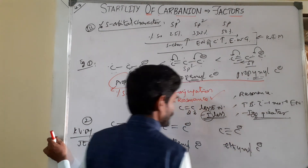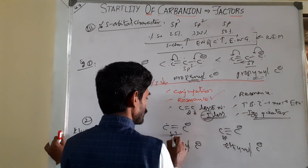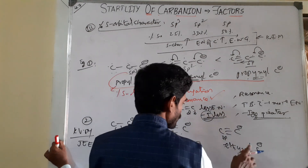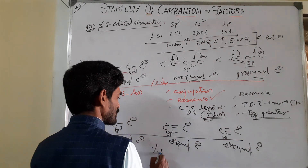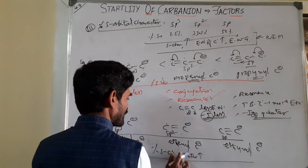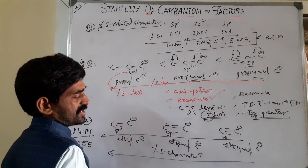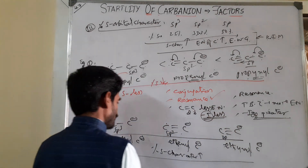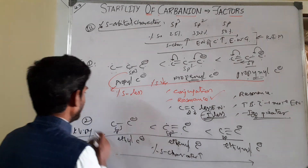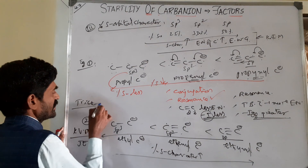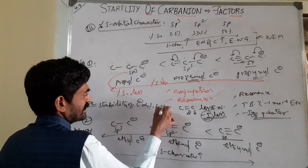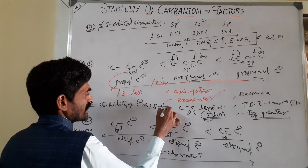If you move from ethynyl to ethyl, S-orbital character decreases, going to be more unstable. Conversely, from ethyl to ethynyl, percentage of S-orbital character increases, so stability also increases. The trick to keep in mind: the stability of a carbanion is directly proportional to percentage of S-orbital character.